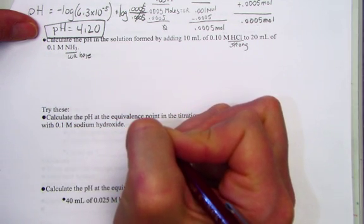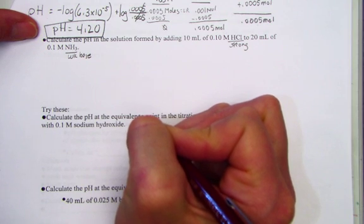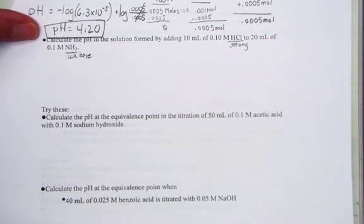What I'm thinking with strong versus weak: do the stoichiometry first, followed by the Henderson-Hasselbalch.